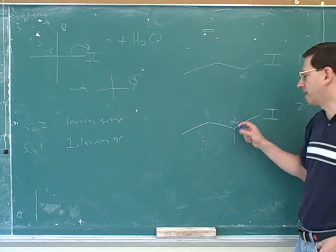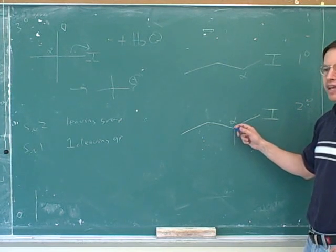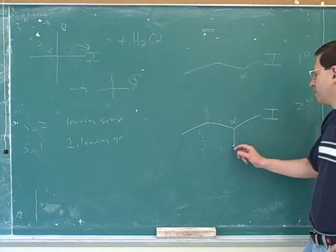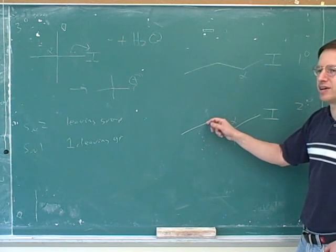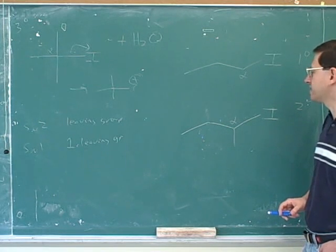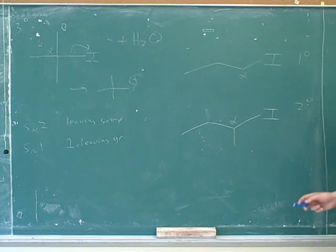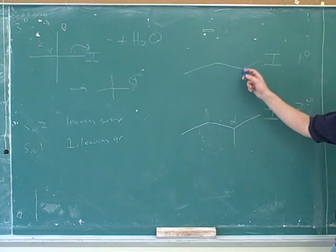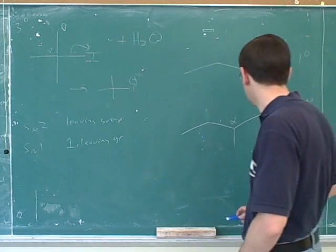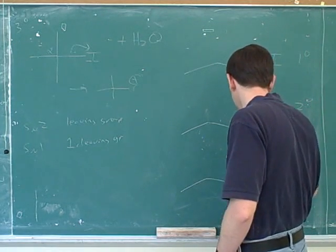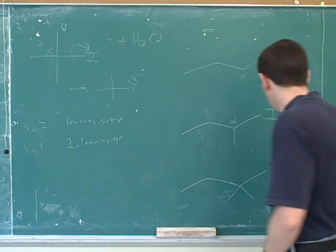Notice how we're focusing on the alpha carbon. We want to know if the alpha carbon is primary, secondary, or tertiary. This beta carbon over here is primary, and this beta carbon over here is secondary, but for the most part, for SN2 and SN1, we mainly just care about how substituted the alpha carbon is. Another name for this is how substituted the alpha carbon is. This is less substituted, and this is more substituted with carbon chains or alkyl groups.